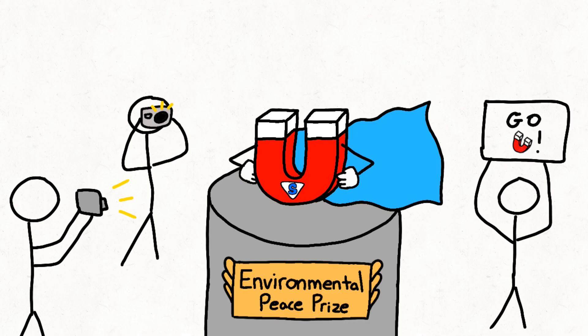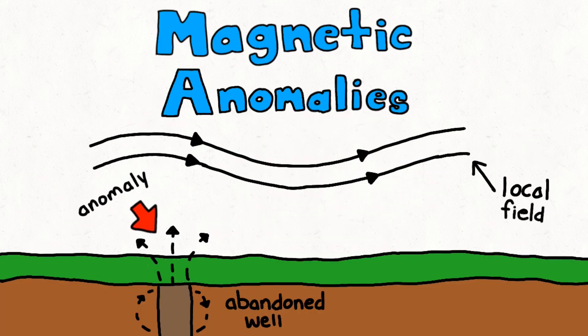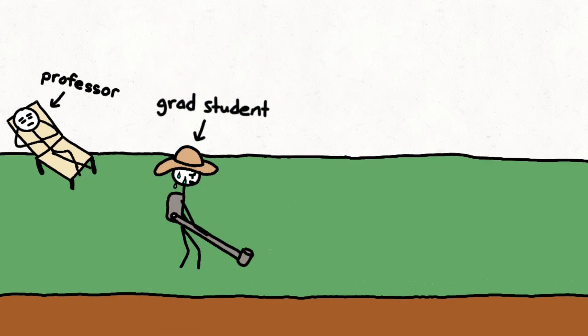So now how can we use magnetism to help solve environmental problems? When we search for buried objects of interest that also happen to have magnetic properties, we refer to these objects as magnetic anomalies. In order to find these magnetic anomalies, we can conduct a magnetic survey.